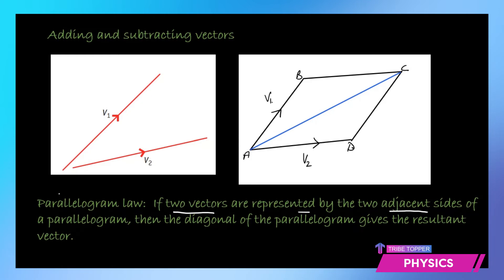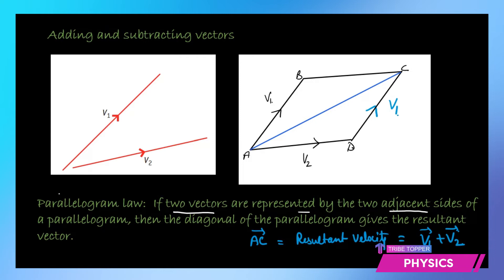We can express this as: the resultant vector AC equals vector V1 plus V2. But in vector form, they are not literally added numerically — there will be a vector sign on top. It doesn't mean the value is simply V1 plus V2. This can be explained with the help of a right-angle triangle.